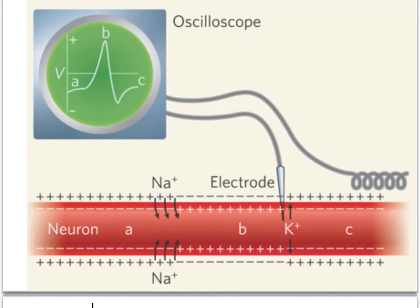The next stage we see is the membrane gradually getting restored by the sodium potassium ion pump, putting the sodium ions on the outside and the potassium back on the inside, restoring it back to normal. And that's what we see at point C — gradually restoring it during our resting potential, getting back up to that normal stage.